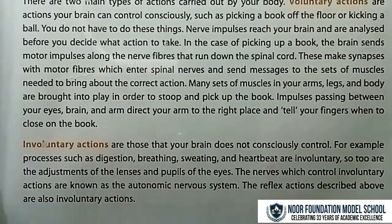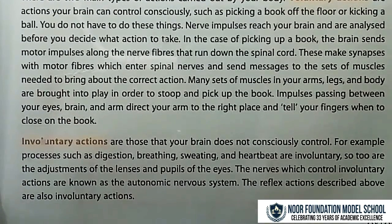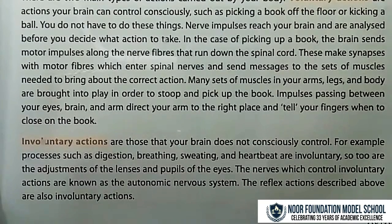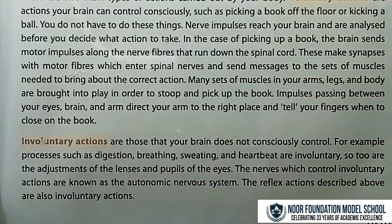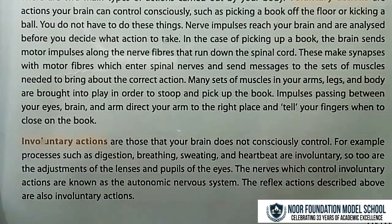Involuntary actions are those that your brain does not consciously control. For example, processes such as digestion, breathing, sweating, and heartbeat are involuntary. So too are the adjustments of the lenses and pupils of the eye. The nerves which control involuntary actions are known as the autonomic nervous system. The reflex actions described above are also involuntary actions.